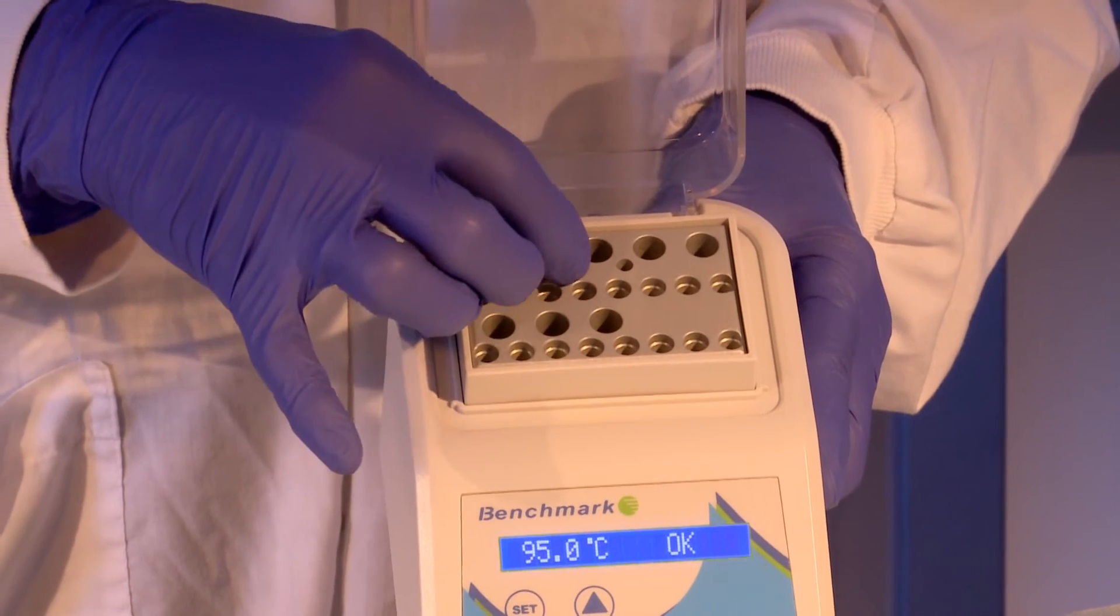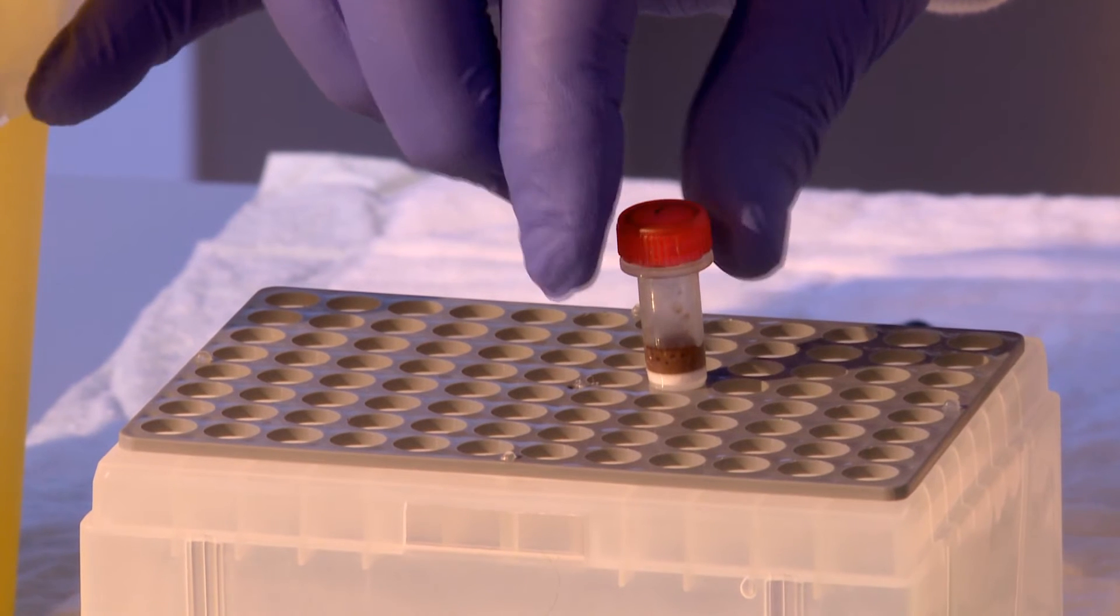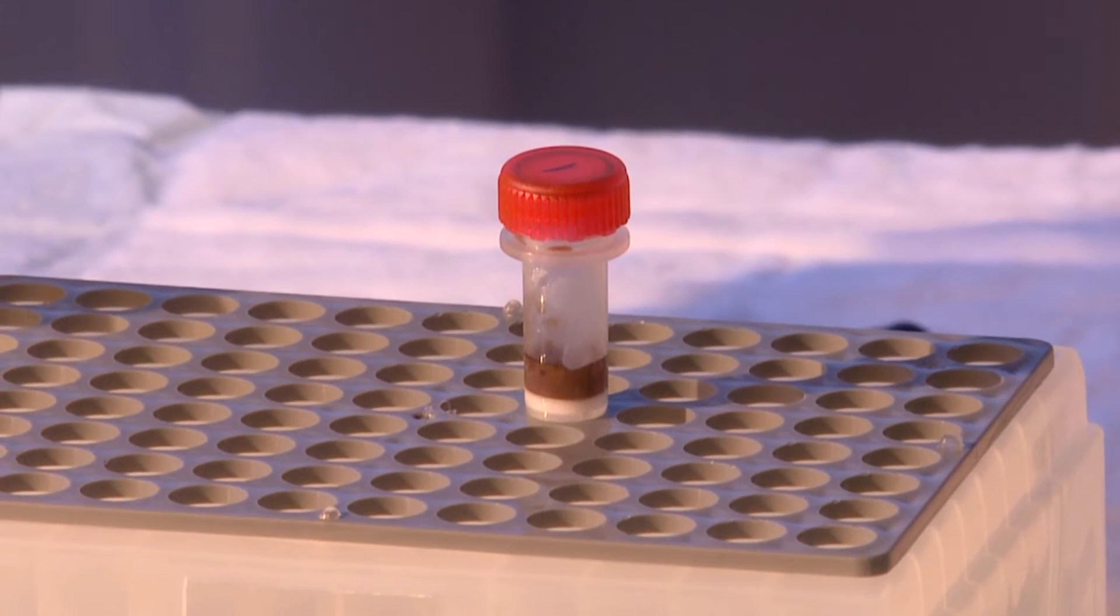Remove the column from the heat block and loosen the red cap. The blood sample will have transformed into a dark red solid clot. Allow the sample to cool for one minute at room temperature.